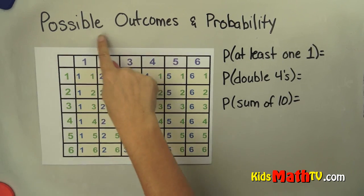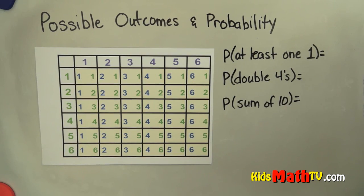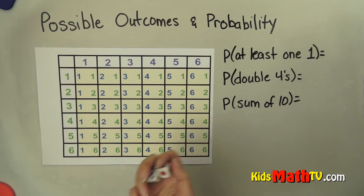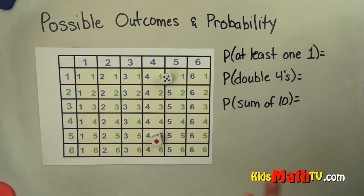In this lesson, we will learn about possible outcomes and probability. So if I have two dice and I roll them, there are a number of possible outcomes.